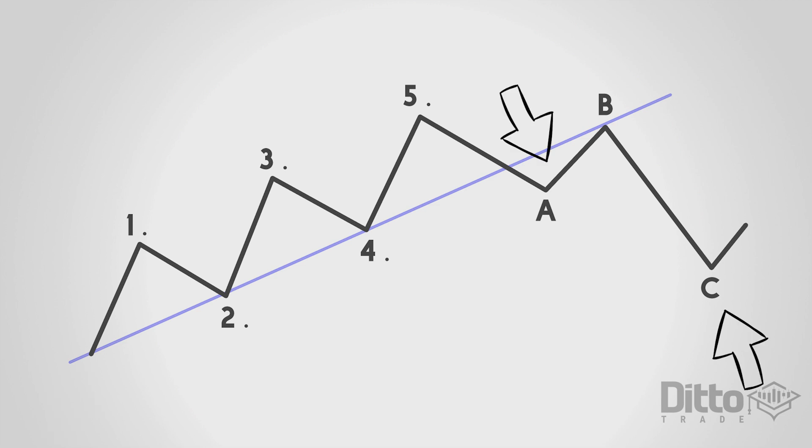Next we have a corrective wave. This travels in the opposite direction of the main trend. Within the forex market where the price moves up or down it is always followed by a correction or an opposite movement.